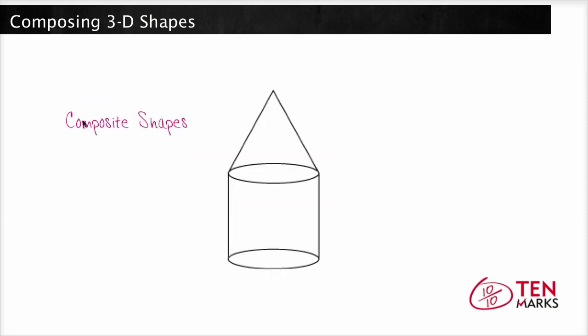These shapes are called composite shapes. For example, this is a composite shape. What shapes make up this composite shape?